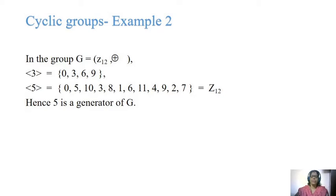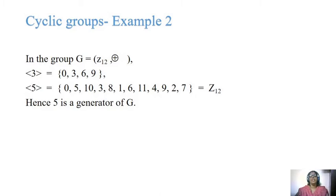Continuing with generator 5: 0 plus 5 is 5, 5 plus 5 is 10, 10 plus 5 gives 15, which modulo 12 gives remainder 3. Then 15 plus 5 is 20, and 20 modulo 12 gives remainder 8. We keep generating elements of Z₁₂ this way. Hence 5 is the generator of the group G.